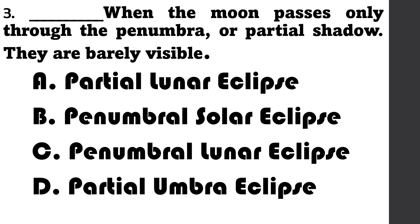Number 3 answer choices: A. Annular eclipse, B. Partial ships, C. Partial diminish — A. Partial lunar eclipse, B. Penumbra solar eclipse, C. Penumbra lunar eclipse, D. Partial umbra eclipse.